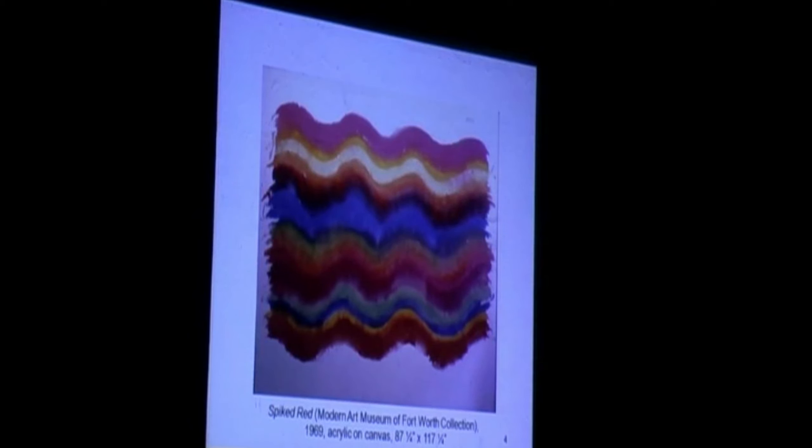By loosening up the curves, I moved into my first wave paintings of 1969. Here are three images. This is Spiked Red. These were one-shot paintings. If they didn't work, they had to be thrown out. You really couldn't paint on them again and retain the freshness.